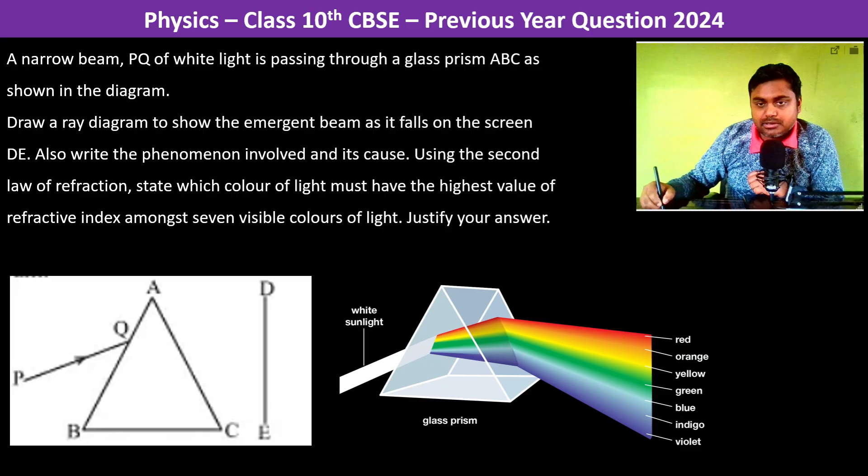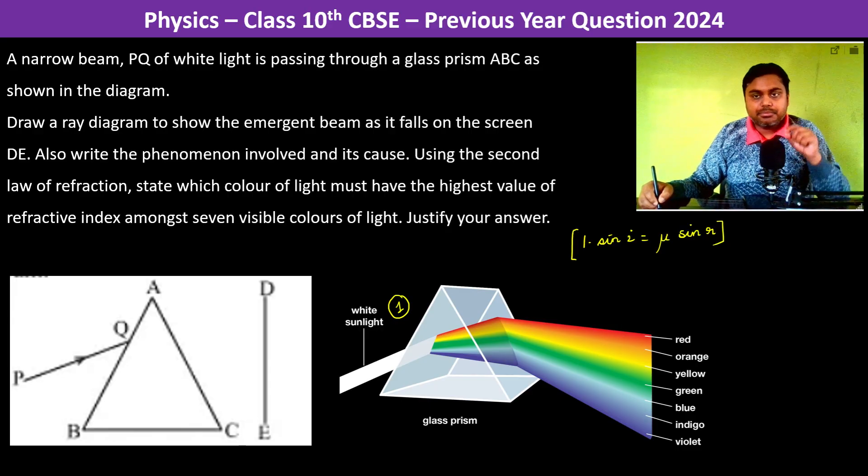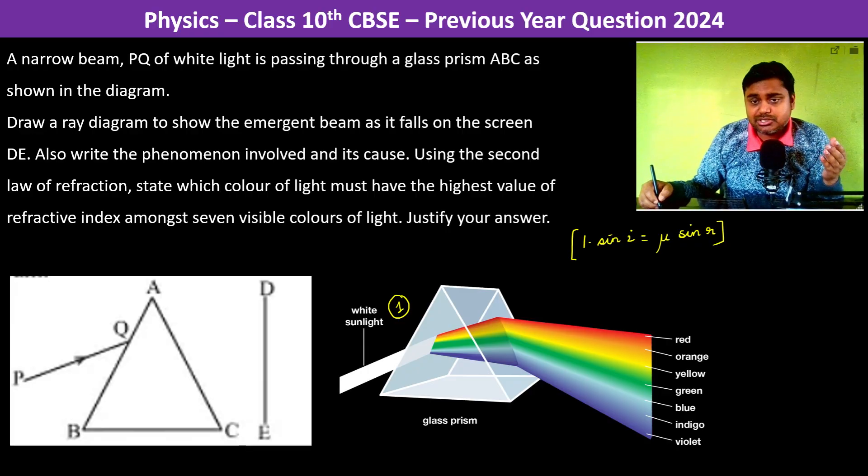So we have by Snell's law, we write 1 × sin i (because air has refractive index of 1). This should be equal to µ × sin r. Now µ for different colors it is different. So this µ depends on the wavelength of light.